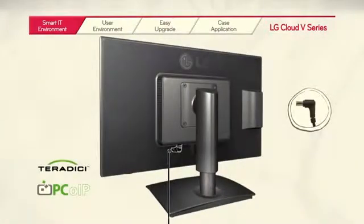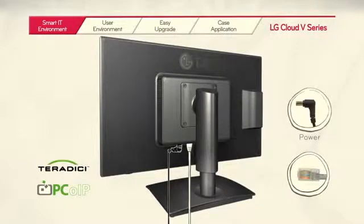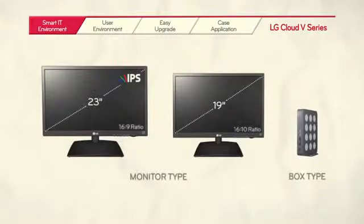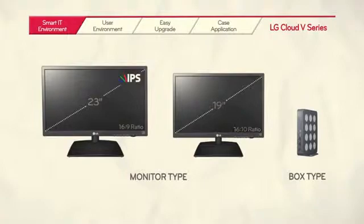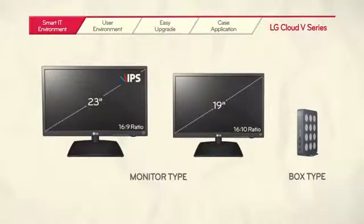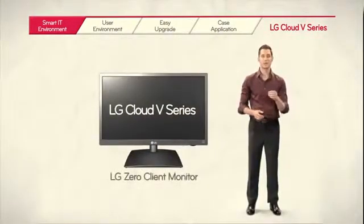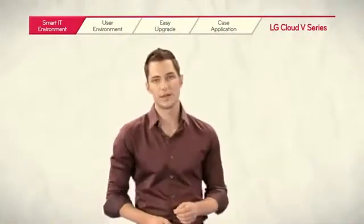LG Cloud V Series uses Teradici's PC over IP to access the virtual desktop. LG Cloud V Series consists of two different types: the monitor type and the box type. The monitor type contains all the components required to carry out all possible computing processes within different sized monitors. The box type is compatible with any monitor and can stand vertically with a cradle or be attached to the backside of a monitor for more space efficiency. The LG Cloud V Series maximizes the benefits of the conventional desktop.